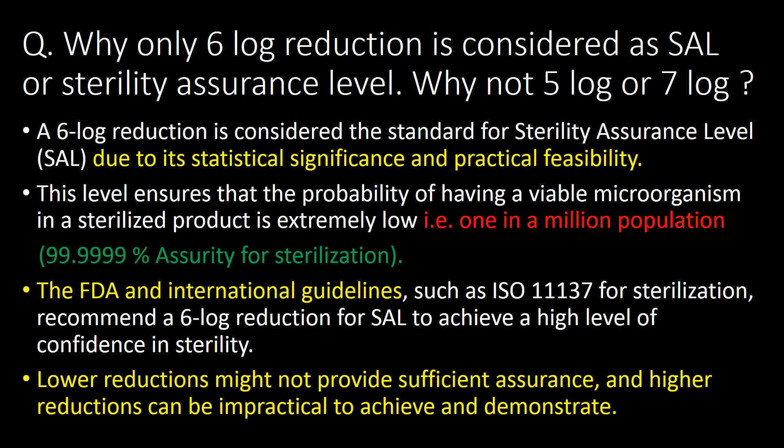The third point is guideline reference. The FDA and international guidelines such as ISO 11137 for sterilization recommend 6 log reduction for sterility assurance level to achieve a high level of confidence in sterility. The fourth important point is that lower reductions might not provide sufficient assurance, and higher reductions can be difficult to achieve and demonstrate.